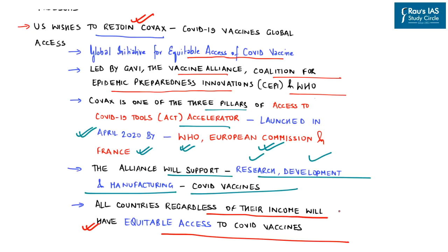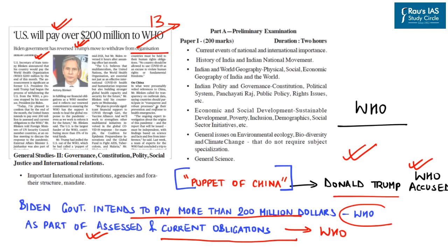In 2020, UPSC asked a question on WHO in GS Paper 2 regarding its role in fighting the COVID pandemic, making this development very important. From prelims, this topic is covered under current events of international importance, and in mains under GS Paper 2 with respect to important international institutions, agencies and forums, their structure and mandate.